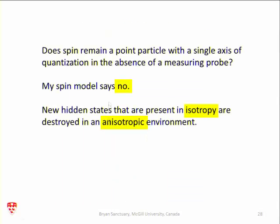My model says new hidden states are present in isotropy. This has nothing to do with uncontrolled perturbation by the act of measurement — it has to do with isotropy and anisotropy. When you put a magnetic field on, space is anisotropic. When you take it off, it's isotropic. These states only exist in isotropy.